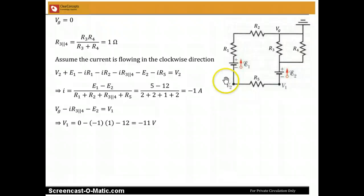Now we assume that the current is flowing in the circuit in this clockwise direction and we start with V2. So V2 moving up across the first battery, we get plus E1, across the first resistance minus IR1, across the second resistance minus IR2.